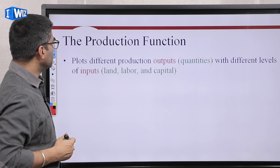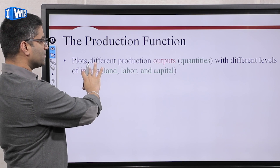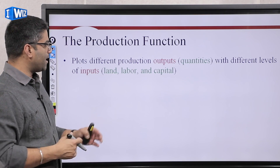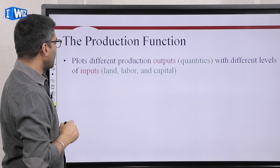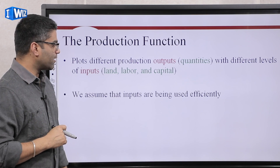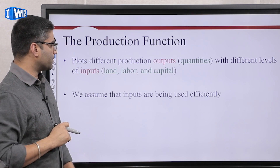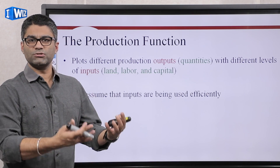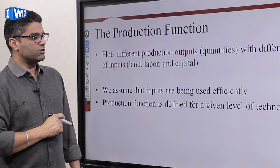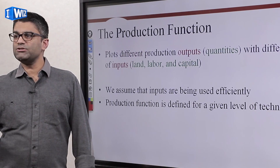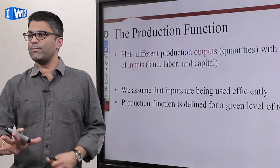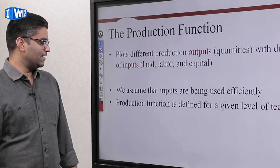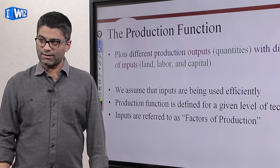So the production function or a graphical representation is going to look at the same combination of output and inputs. A couple of assumptions: we assume that the inputs are being used efficiently, so the combination of inputs used to produce a given level of output is efficient. The production function is defined for any given level of technology — the technology available to produce the good is fixed when we look at this combination of inputs and output, because if you improve technology, the same person will become more productive.